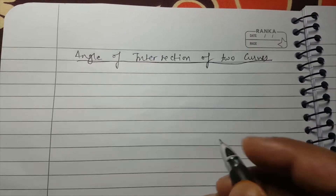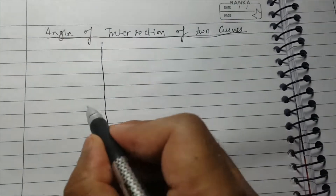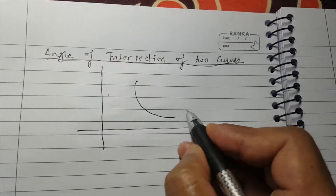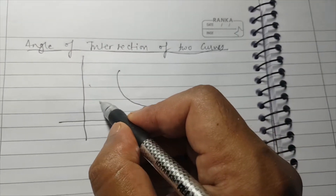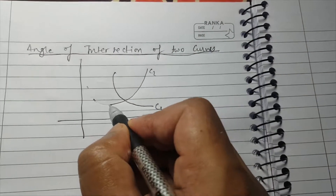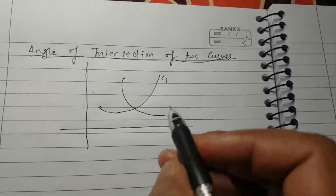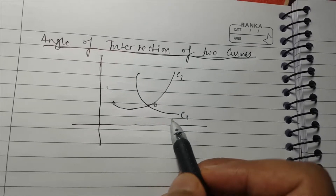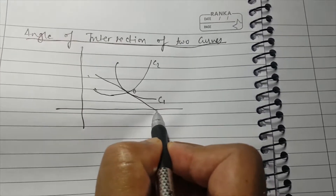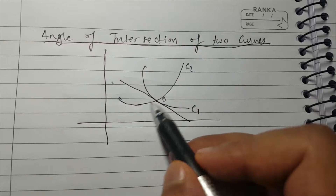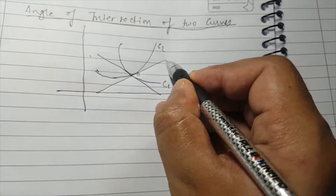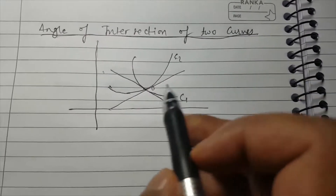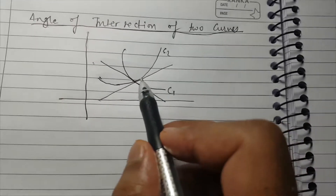Let me show you with a graph. Let these be your x and y axes, and let this one be your first curve denoted by C1. Let us suppose this one is your second curve C2. They are intersecting at point O. Now let us draw the tangent to C1 at this point, and let us draw the tangent to C2 at this point as well. So the angle of intersection of two curves is defined to be the angle between these tangents at the point of intersection.